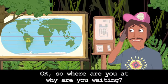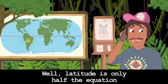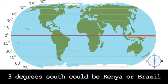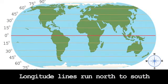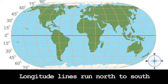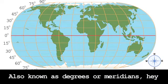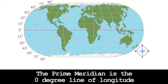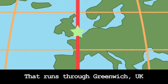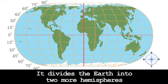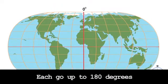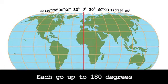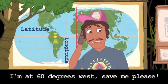The north pole's at 90 degrees north, and the south pole is at 90 degrees south, of course. So where you at? Why you waiting? Well, latitude is only half the equation. Three degrees south could be Kenya or Brazil. So I need the longitude to seal the deal. Longitude lines run north to south, also known as degrees or meridians. The prime meridian is the zero-degree line of longitude that runs through Greenwich, UK. It divides the earth into two more hemispheres — the eastern and the western. Each go up to 180 degrees. I meant 60 degrees west. Save me, please.